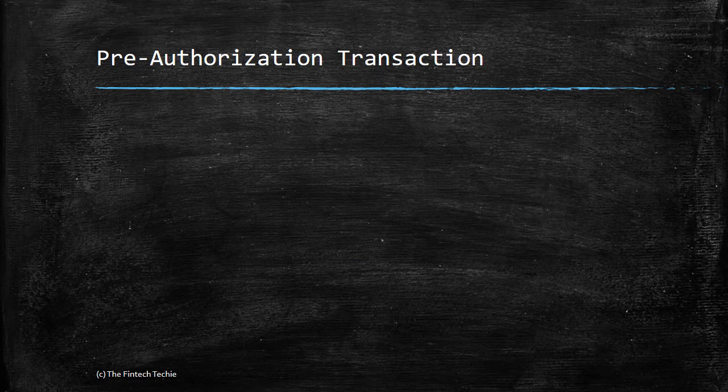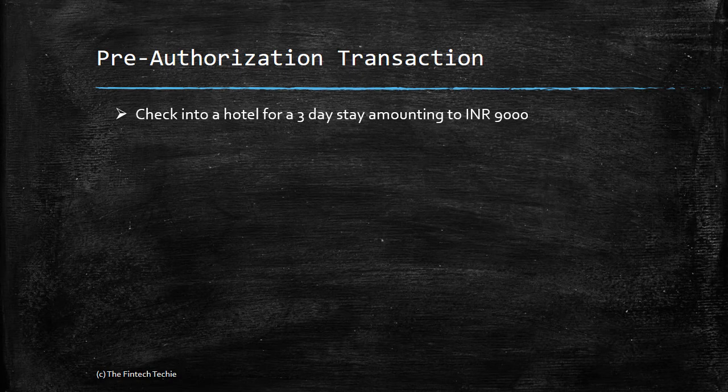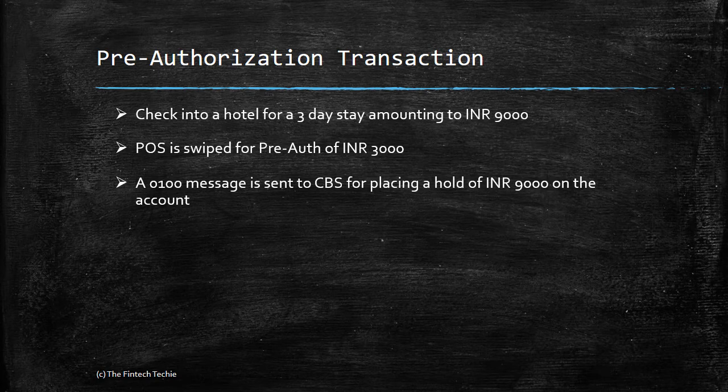A special transaction type is pre-authorization. Suppose you check into a hotel for a three-day stay amounting to 9000 rupees. At reception, you swipe your card for 9000. A 0100 message is sent to core banking, which places a hold or lien of 9000 on the account. The 9000 is not actually debited — it is only blocked. Note that this applies to debit cards only, not credit cards. The hold is typically placed for a maximum of 15 to 30 days.